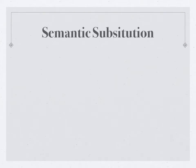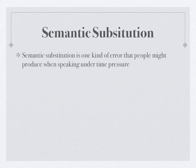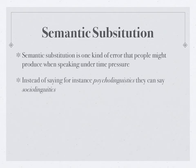The first example of speech error we're going to talk about is referred to as semantic substitution. It is one kind of error that people might produce when speaking under time pressure. Instead of saying, for instance, 'psycholinguistics,' they can say 'sociolinguistics.' This example actually happened to me in my previous presentation — instead of using the word 'psycholinguistics,' I used the word 'sociolinguistics' because of time pressure.